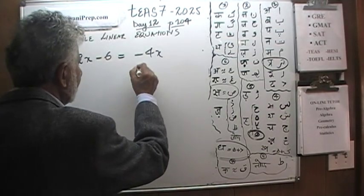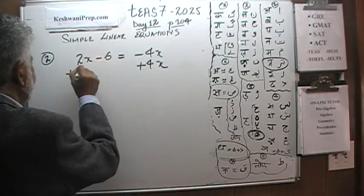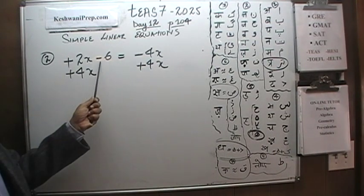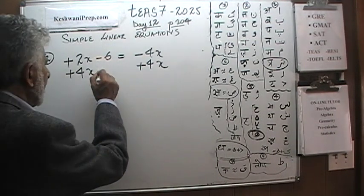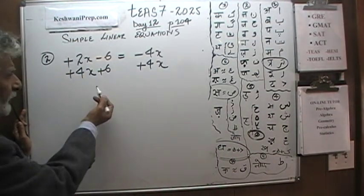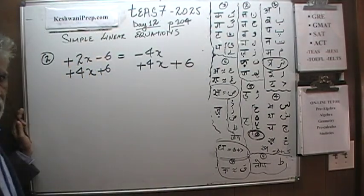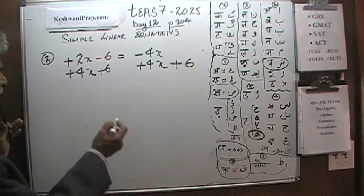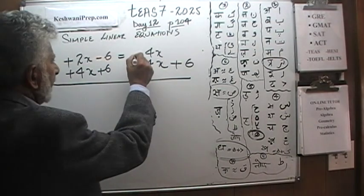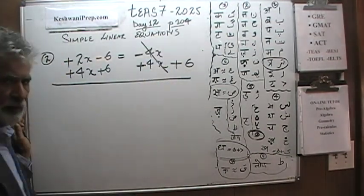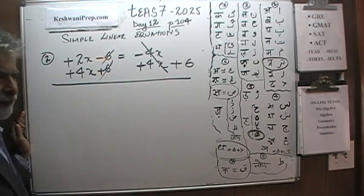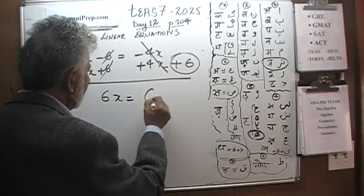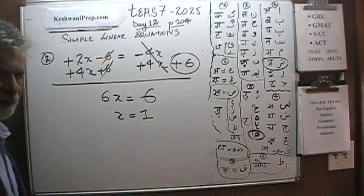Since it's negative 4x, we can get rid of it by adding 4x to both sides. Even though there is no sign in front of the 2x, it is also positive. Now we have to get rid of this negative 6 by adding 6 to both sides. The negative 4x and positive 4x cancel each other. The negative 6 and positive 6 cancel each other. We are left with 2x plus 4x equals 6x, and 6x equals 6, which means x must be 1.